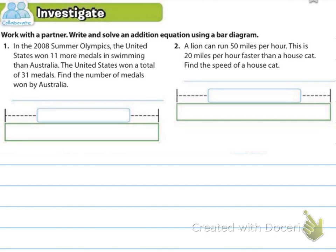Now we're going to have you do some examples on your own and pause the video, and then you'll come back to it. You're going to work on number one and two. Number one, in the 2008 Summer Olympics, the U.S. won 11 more medals in swimming than Australia. The United States won a total of 31 medals. Find the number of medals won by Australia. And then number two says, a lion can run 50 miles per hour. This is 20 miles per hour faster than a house cat. Find the speed of the house cat.